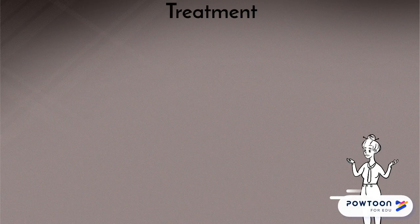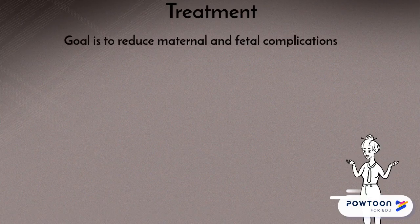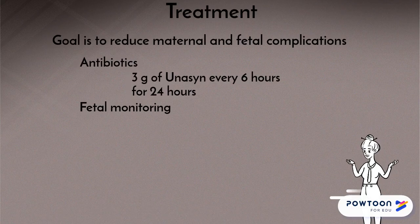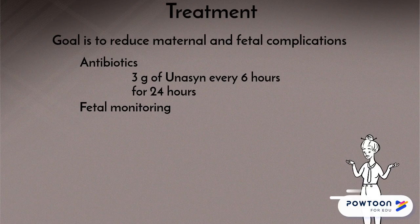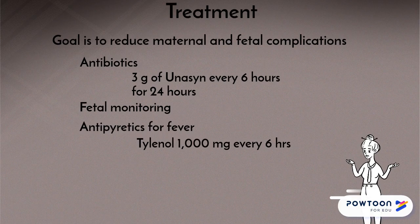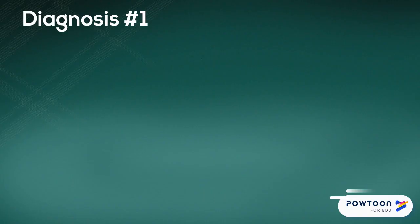Treatment for chorioamnionitis includes reducing maternal and fetal complications, continuing fetal monitoring for any distress, and administering antibiotics and antipyretics. The patient received three grams of Unasyn, a broad-spectrum antibiotic, every six hours for 24 hours, and one gram of Tylenol every four to six hours for fever control.